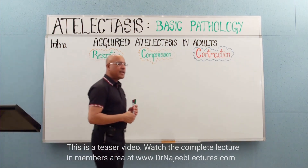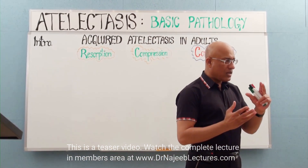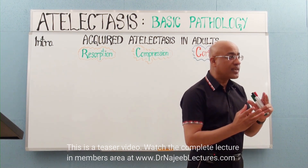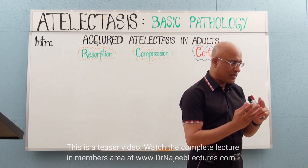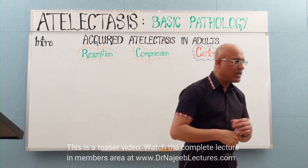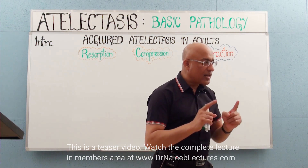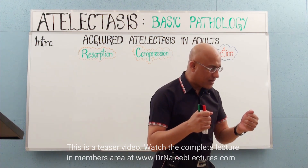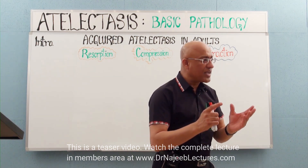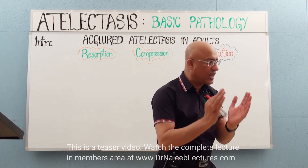What exactly is atelectasis? Atelectasis is when a part of a lung or a lung's air spaces are deflated or they are inadequately inflated. It is a condition in which air spaces in the lung are inadequately expanded with air — they are under-aerated or they are not having enough air.